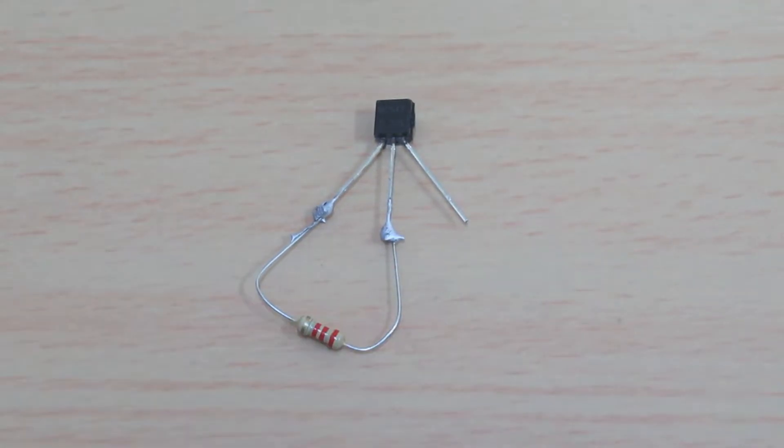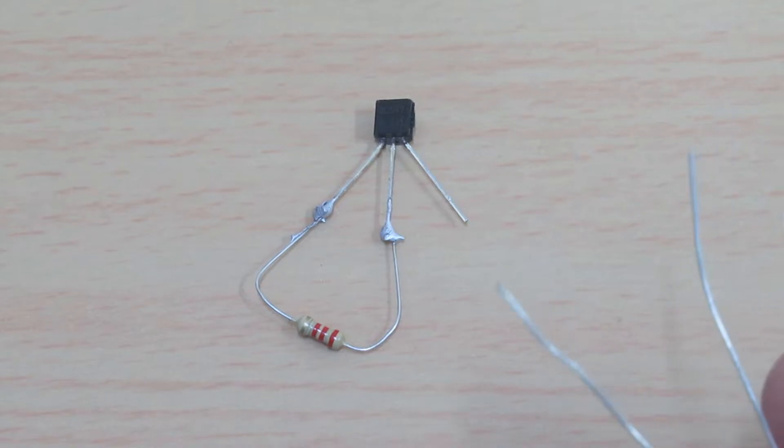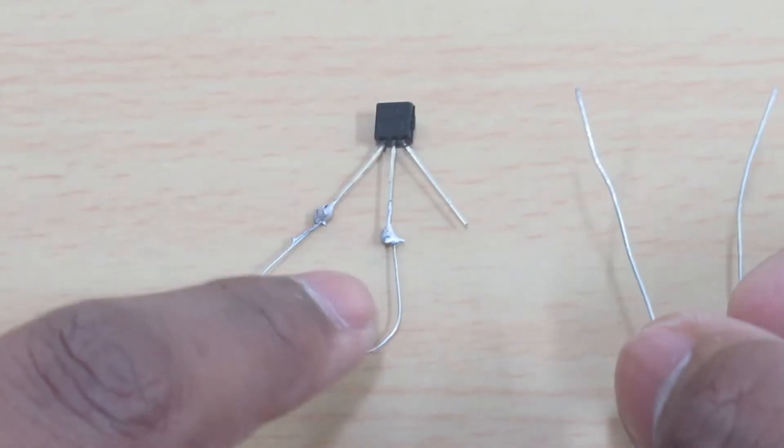Now the next step is to take your LDR and connect one end to the base of your transistor.